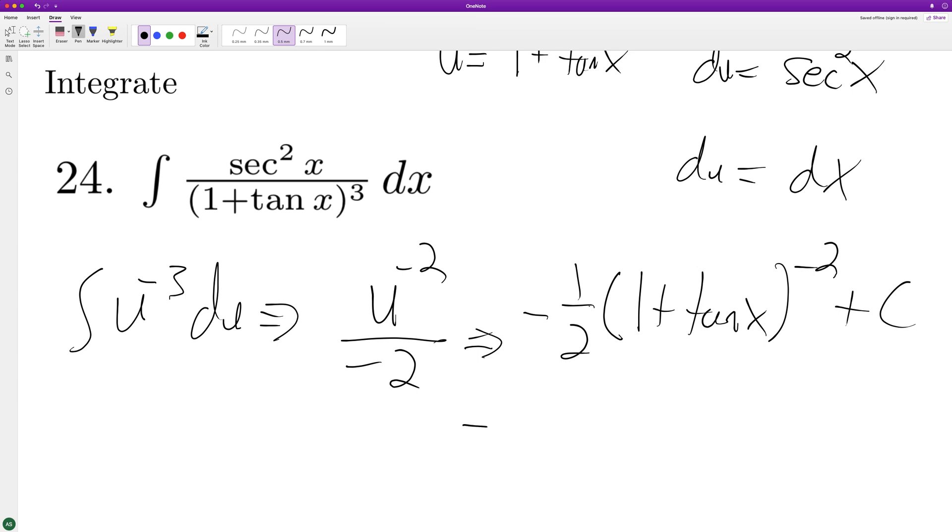And that's pretty much it. You can rewrite it as negative 1 over 2 times 1 plus tangent. That's not right.